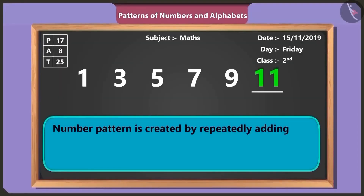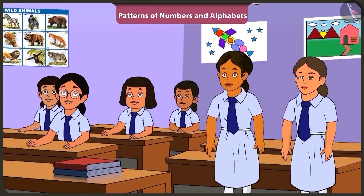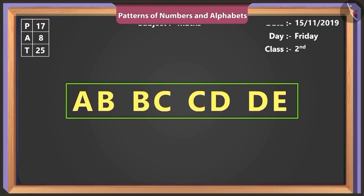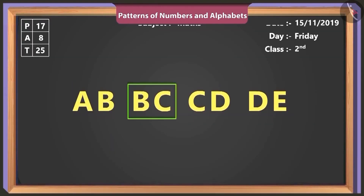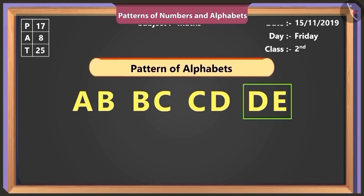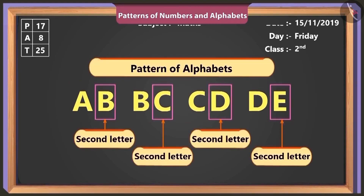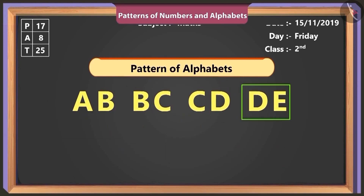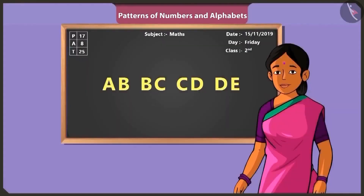So children, a number pattern is created by repeatedly adding a specific number to given numbers. We want to know more about patterns. Okay, so can you identify this pattern? A, B, B, C, C, D, D, E. Here, each term is of two alphabets. The second alphabet of the first term becomes the first alphabet of the second term, and the pattern is getting built further. Very good, Vinny.